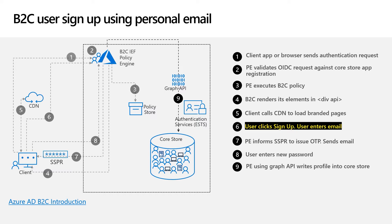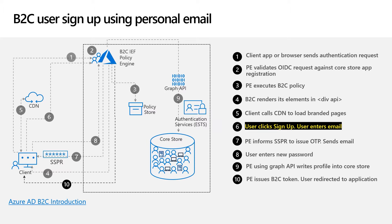Now you are onboarded with an account into the application. The policy engine completes the journey by redirecting the user to the application with a token. This response is a JSON Web Token, and you are now logged in. If the initial authentication request were to be SAML, then a SAML assertion will be issued in the response to the application. That completes the user's sign-up.